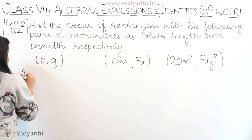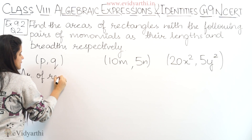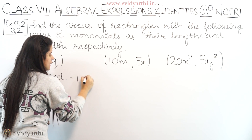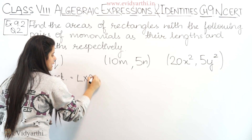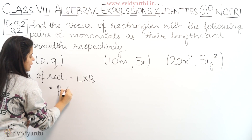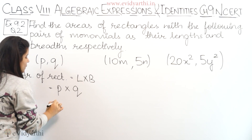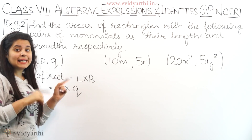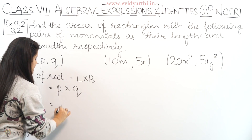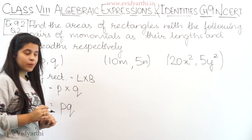The first pair is p and q. Area of rectangle equals length into breadth, so length is p and breadth is q. Now p into q — these are two different variables, so we simply write it as pq.